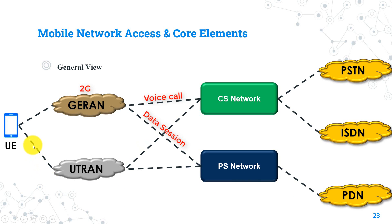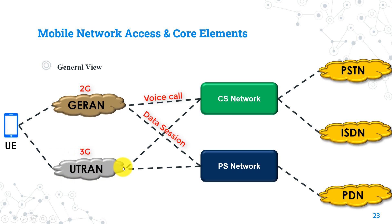If the user is in a 3G coverage area, he will connect first with the UTRAN, which is the 3G radio access part. The same core as 2G applies: CS for voice and PS for data session. This is a quick general view of the network structure.